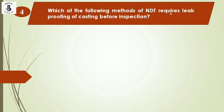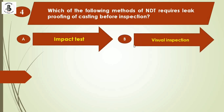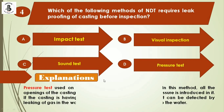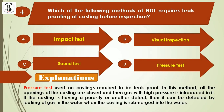Next question: Which of the following NDT methods requires leak proofing of castings before inspection? Option A: impact test. Option B: visual inspection. Option C: sound test. Option D: pressure test. For leak proofing, the pressure test is used. All openings of the casting are closed and high-pressure gas is introduced. If the casting has porosity or material defects, it is detected by gas leaking into the water when the casting is submerged. The right answer is option D.